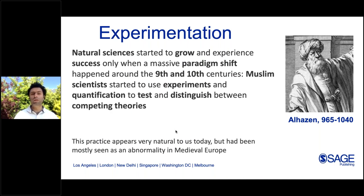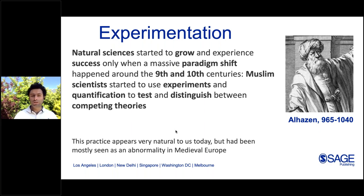Experimentation is also rather new in our culture. It was only around the 9th and 10th centuries that scientists started to use experimentation, which later — about 600 years later — led to the formation of scientific methods. This paradigm change took almost 6-7 centuries itself. Before that, we had very little to say about how the world functions beyond religion and spiritual beliefs. Science in the modern sense only started to appear when we began with experimentation, quantification, and testing to distinguish between different theories.